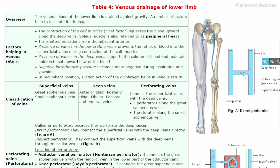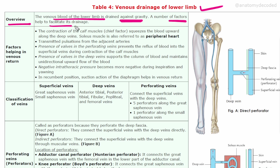Let's start with our topic. The first heading is overview. The venous blood of the lower limb is drained against gravity. There are a number of factors which help and facilitate its drainage. What are the various factors which help in returning the blood towards the heart?